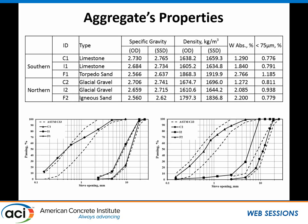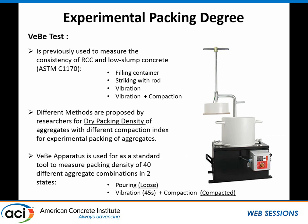Southern aggregate is limestone. Looking at the properties: the F1 southern aggregate is slightly finer than F2, and the intermediate for southern aggregate is not actually an intermediate — it's more towards the coarse, versus the northern one which is more fine. There is a difference in D-max between the two, but they're both one inch.